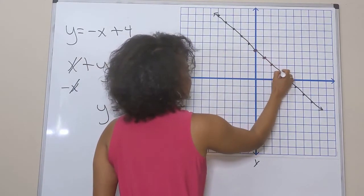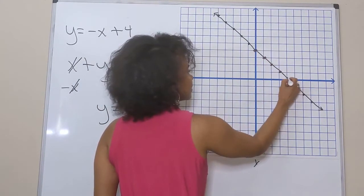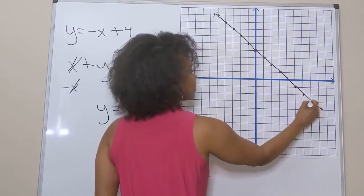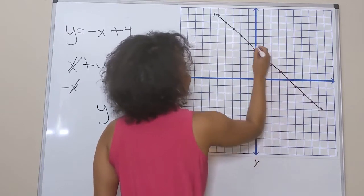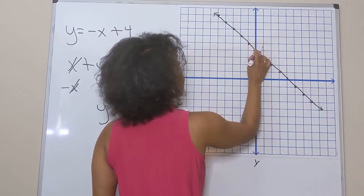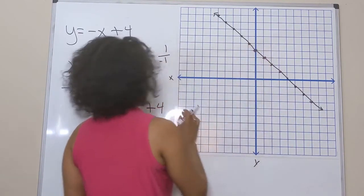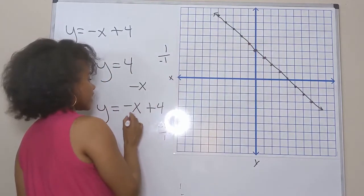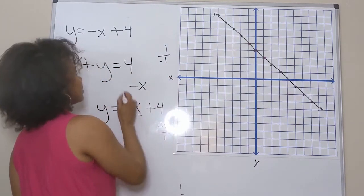The y-intercept is positive four and the slope is negative one over one, so I go down one and over one — and I notice I'm getting points on the exact same line because it is the same line.